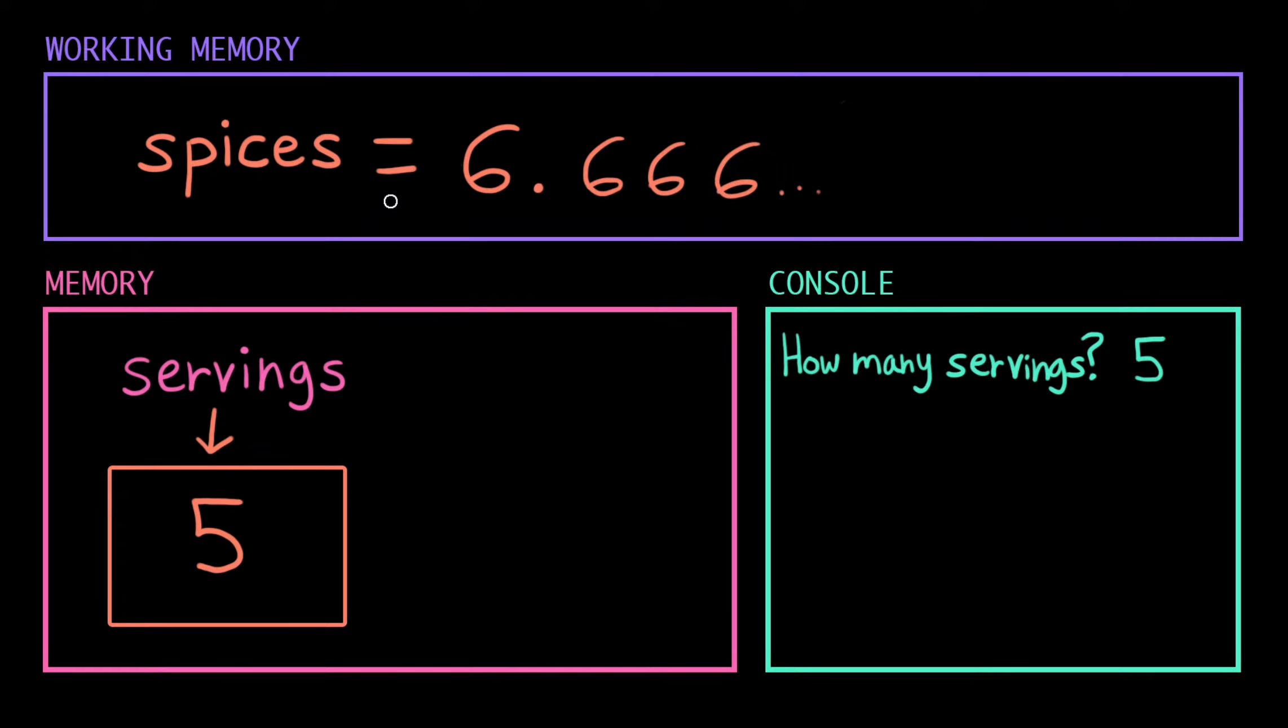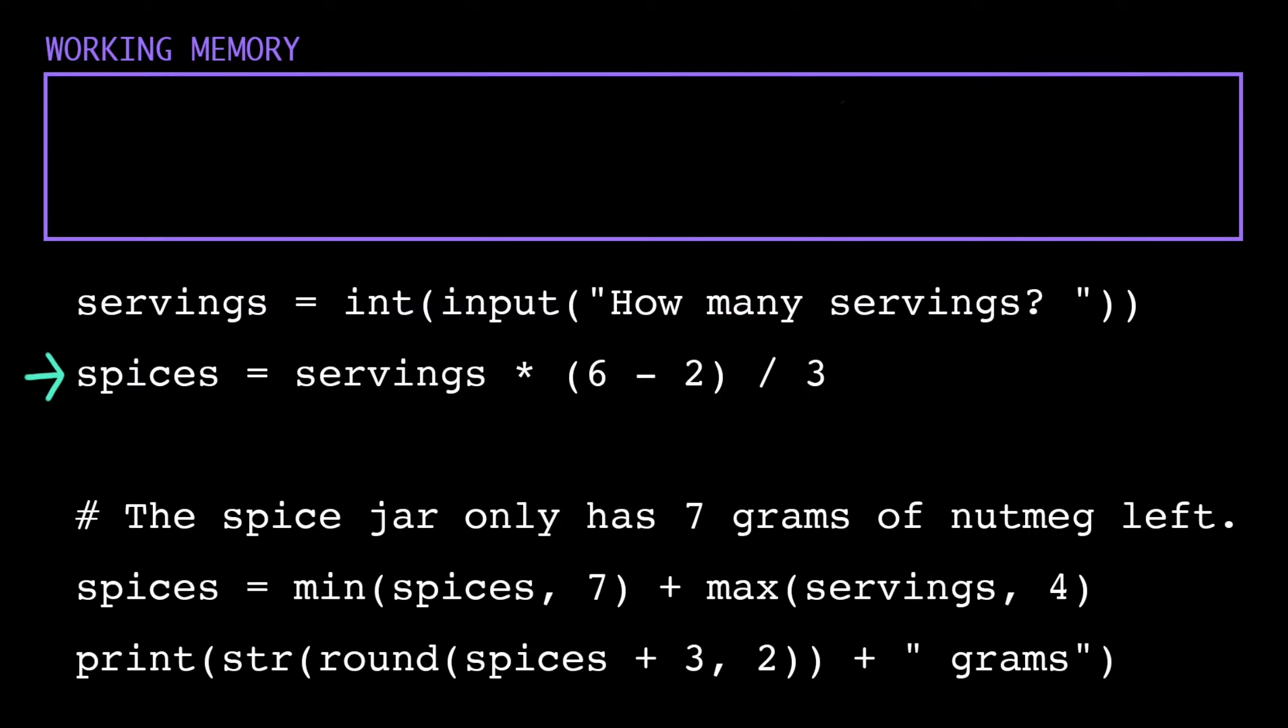Now it sees that equal sign and says, ah, you want me to assign this value I finally have to the variable spices. It checks its memory and sees that it has no recollection of a spices, so it allocates a new chunk, tags it with a name, and sticks that value in there for later. All done, clear it out. This next line is blank, so the computer skips that,